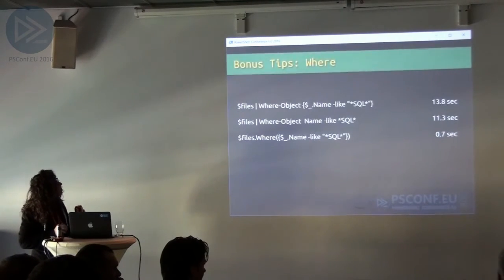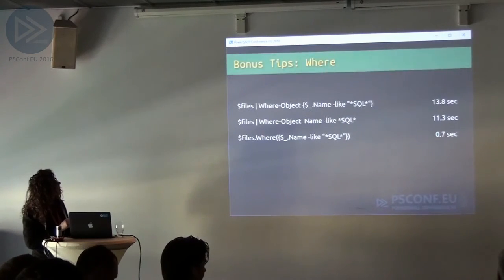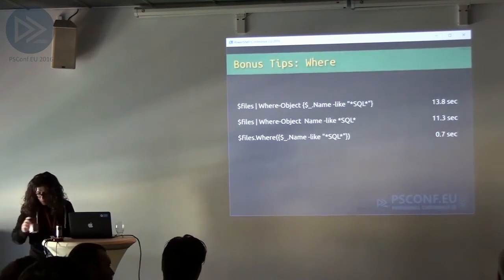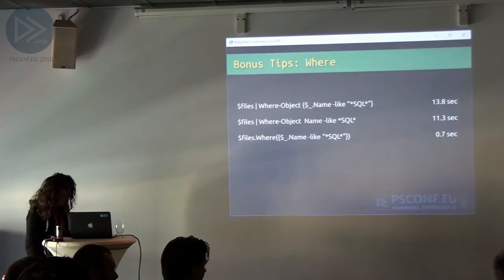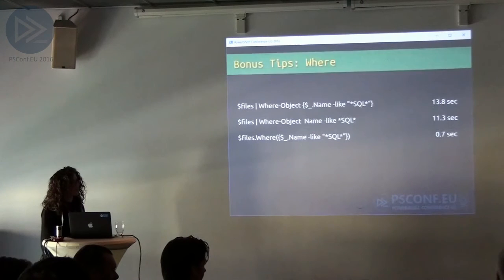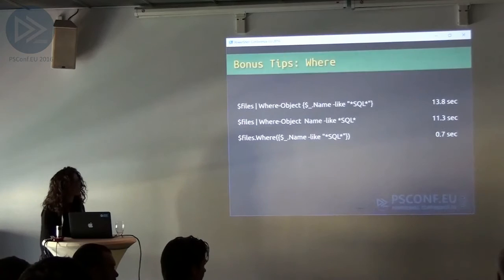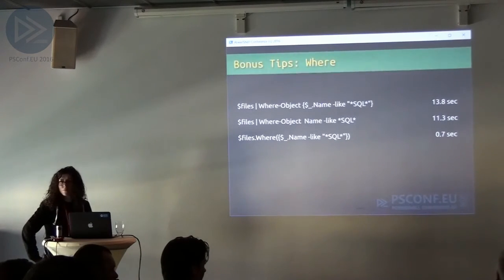The bottom option is fastest because it avoids the pipeline entirely. The pipeline overhead is really significant. That's one reason why using classes is beneficial — you can use method dispatch rather than function dispatch, and method dispatch is a great deal faster. You can do all your logic with classes and then create commands that use those classes, just like you do in C#.